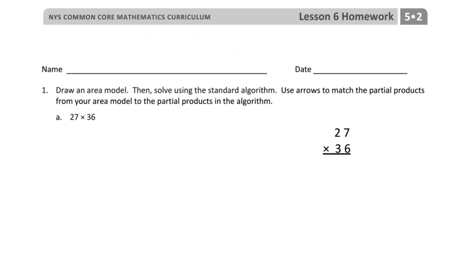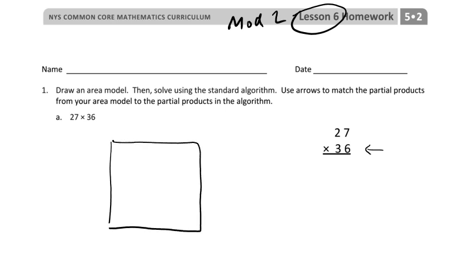Hey everybody, this is Module 2, Lesson 6 homework. Some of you said you might need a little help, so make sure you try some of the problems first. This is a little different than before — I'm going to look at their algorithm, which has the bigger number on the bottom. We usually put the bigger number on top, but it doesn't really matter for multiplication. For the area model to match the algorithm, the top number needs to go on top, so 27 goes on top: 20 plus 7, and then 30.